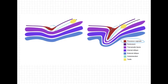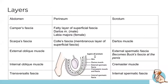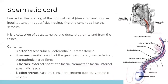Next is the spermatic cord. Through the descent, the testes remain in contact with the abdomen via the spermatic cord, which contains structures running to and from the testes and suspends the testes in the scrotum. The cord begins at the deep inguinal ring and goes to the superficial inguinal ring, connecting to the testes at the posterior medial border.